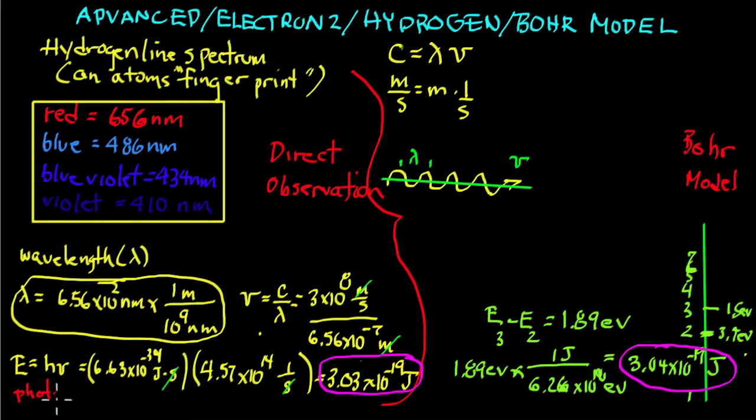And the red photon is 3.03 times 10 to the minus 19 joules. That's from reality.